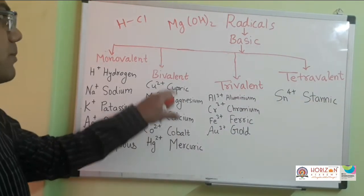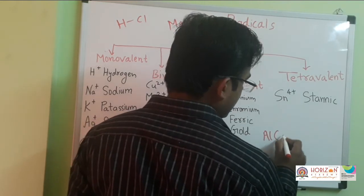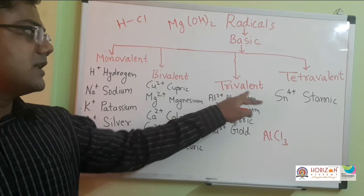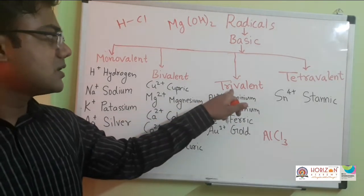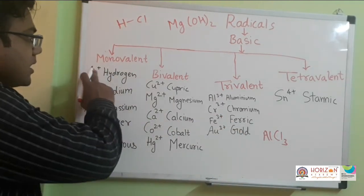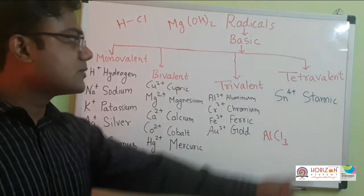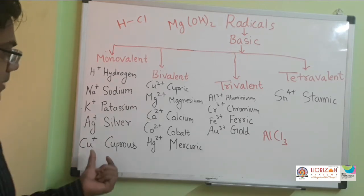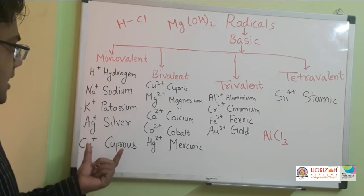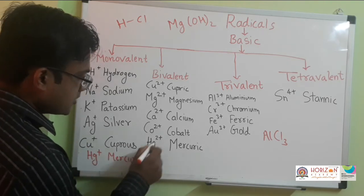Trivalent means it can form three bonds — for example, aluminium chloride, AlCl3, where single aluminium combines with three chlorine atoms. Trivalent means three plus charges. For copper: Cu plus (cuprous) has single plus charge, and Cu2 plus (cupric) has two plus charge. For mercury: Hg plus is mercurous and Hg2 plus is mercuric.